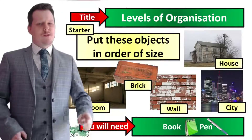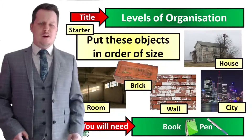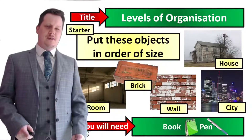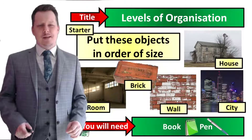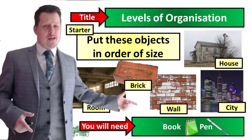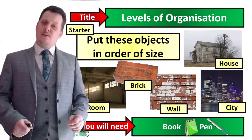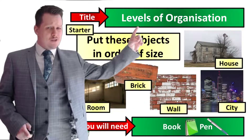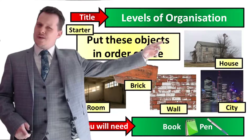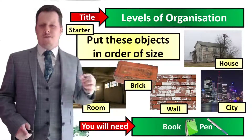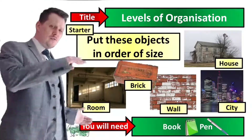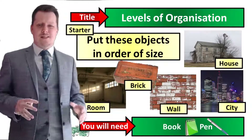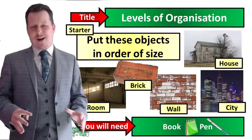Hello everybody and welcome to the first lesson on the organisation of the human body. In order to complete this lesson all you're going to need is a book and a pen. In your book I'd like you to write down our title which is Levels of Organisation, and for your starter activity I'd like you to write down these five objects in order of size.